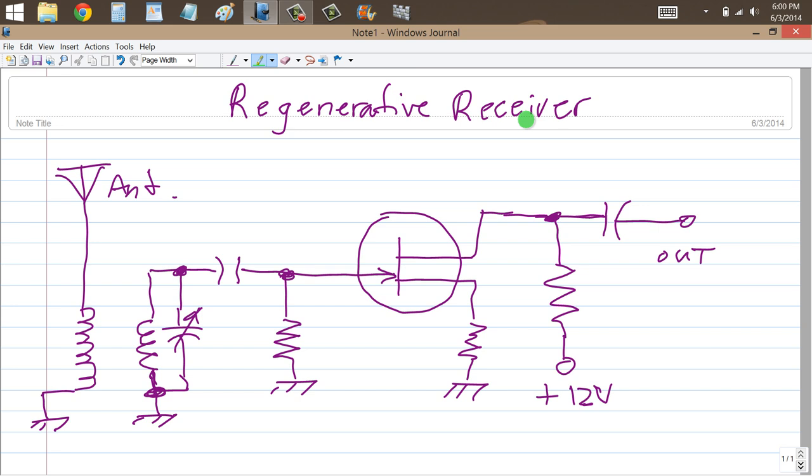What we're looking at here is a simple front end or pre-amplifier that might be used with almost any radio receiver, shortwave radio receiver in particular. Shortwave, referring to the range of frequencies from approximately 1.7 to 30 megahertz or thereabouts. Just above the standard broadcast band up to the top of the high frequency portion of the RF spectrum.